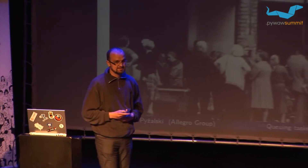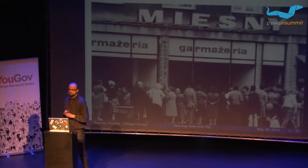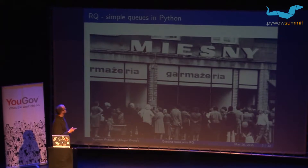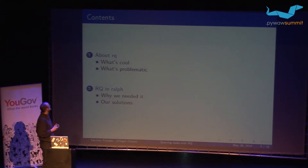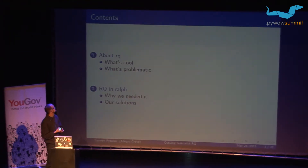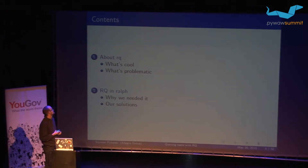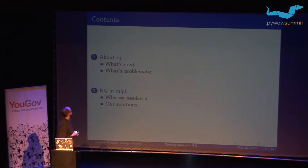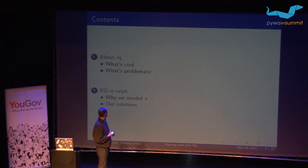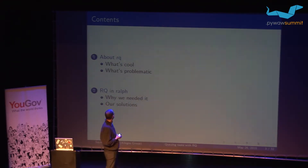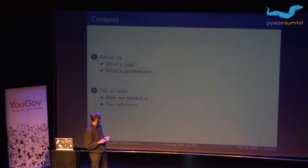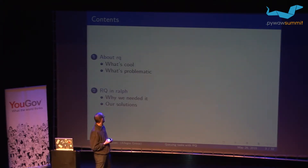I would like to talk to you about RQ. RQ is a very simple and lightweight library, but we use it and we really love it. This is a queuing system that uses Redis as its backend. I would like to talk about two things: first, about RQ itself — why we love it and what problems we encountered — and second, our use case in RALF.